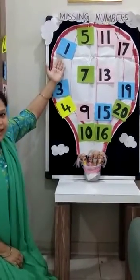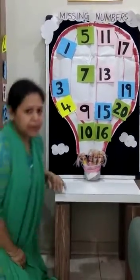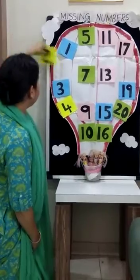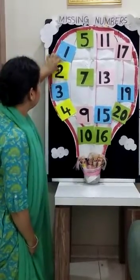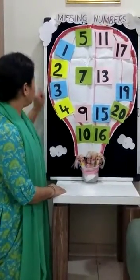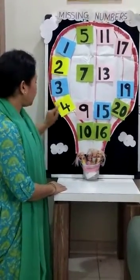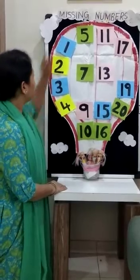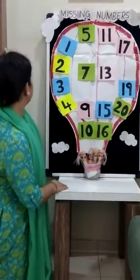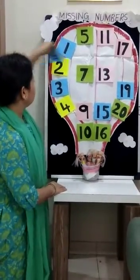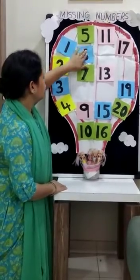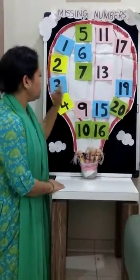So number 1 is there. So which number comes after number 1? Yes, number 2. After number 2, 3 and 4. 5, again 6 is missing. So take 6 number like this. 6, 7.